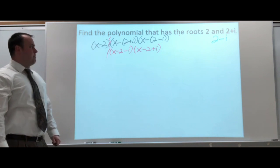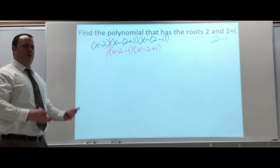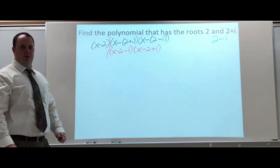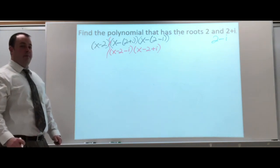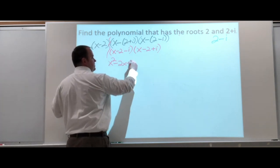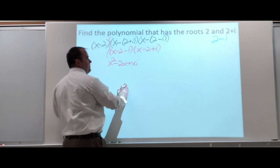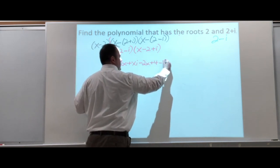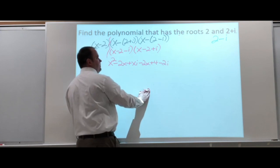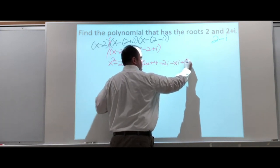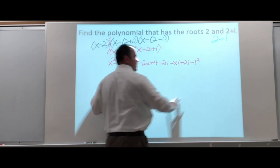But, just like before, how the radical is either simplified or canceled, same thing here should happen with those i's. Those i's should either simplify or cancel out. X squared minus 2x plus xi minus 2x plus 4 minus 2i minus xi plus 2i minus i squared. So, that's pretty big.